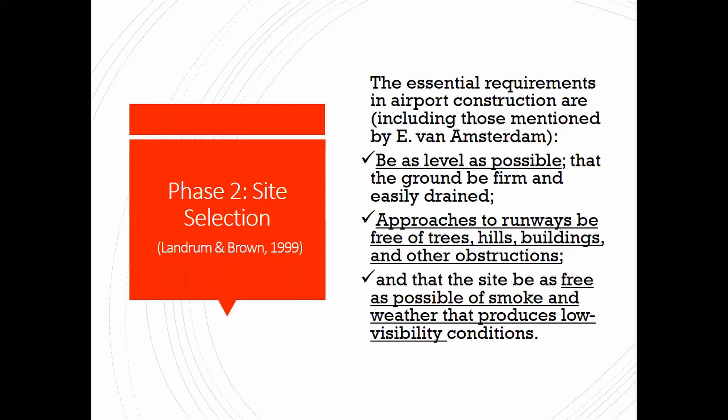Phase two is site selection. The essential requirements in airport construction include: the site should be as level as possible — obviously you don't want to land on the side of a mountain. Approaches to runways should be free of trees, hills, buildings, and other obstructions. That's why airports are often on the outskirts of a city — the city gets built first, and then the airport is built outside as development grows. The site should also be as free as possible from smoke and weather that produces low visibility.